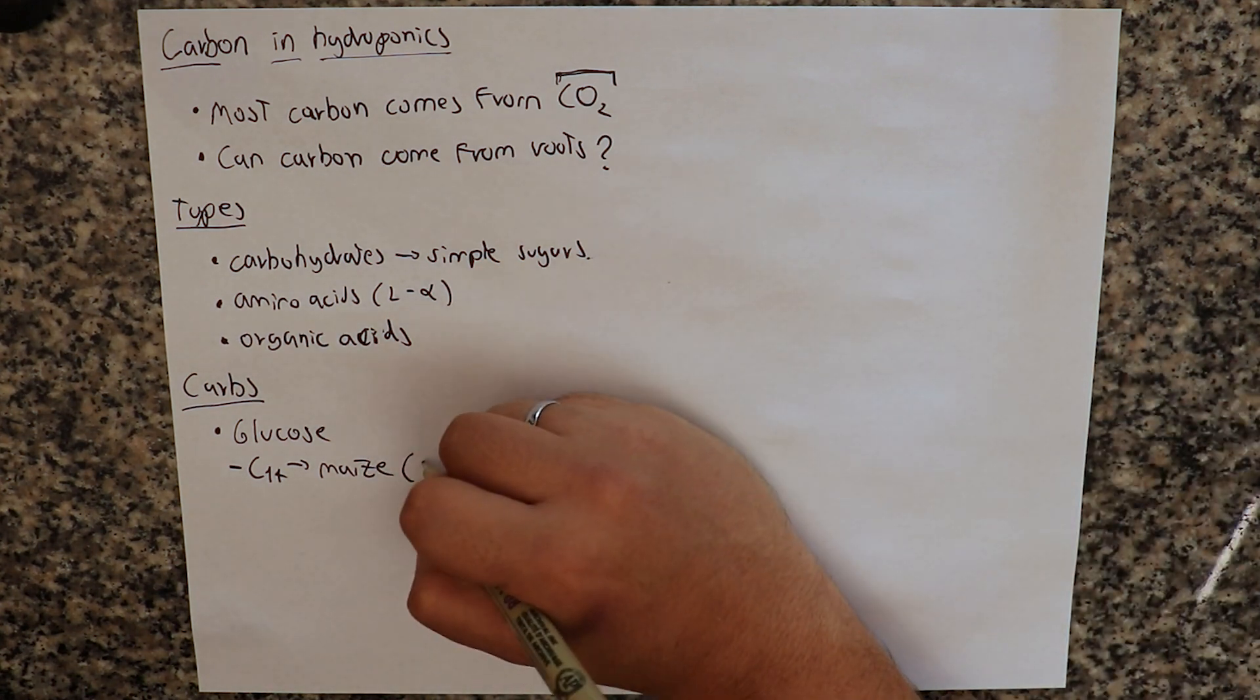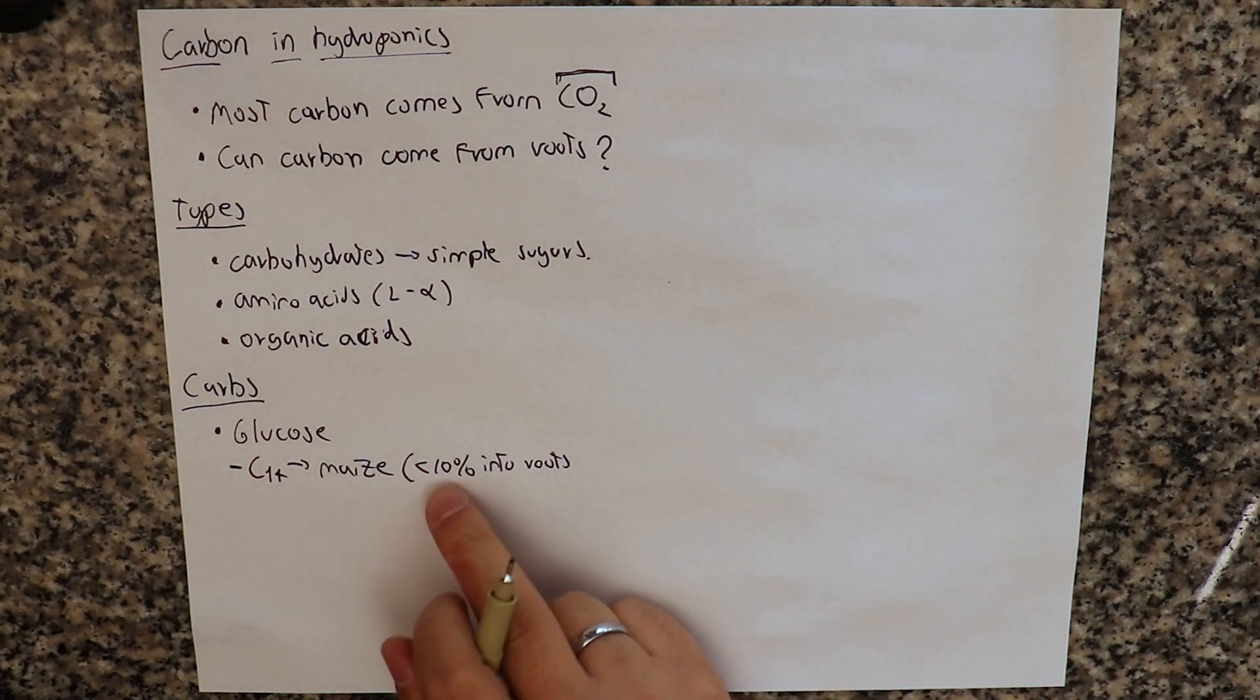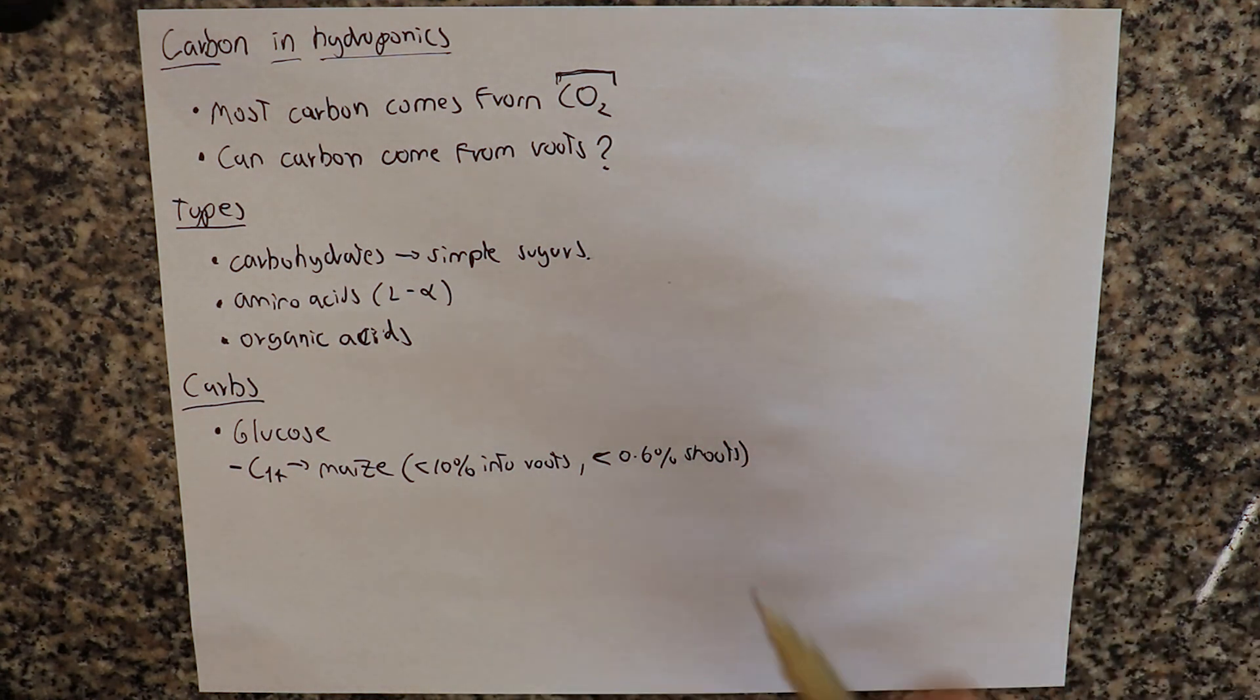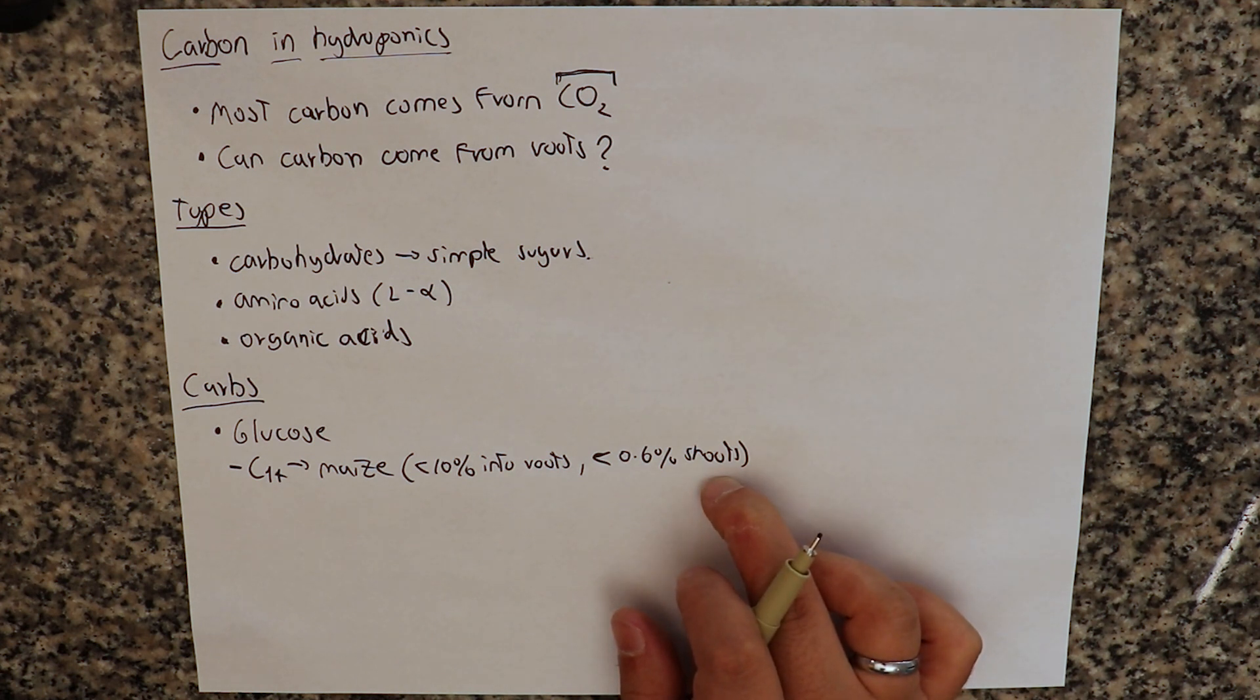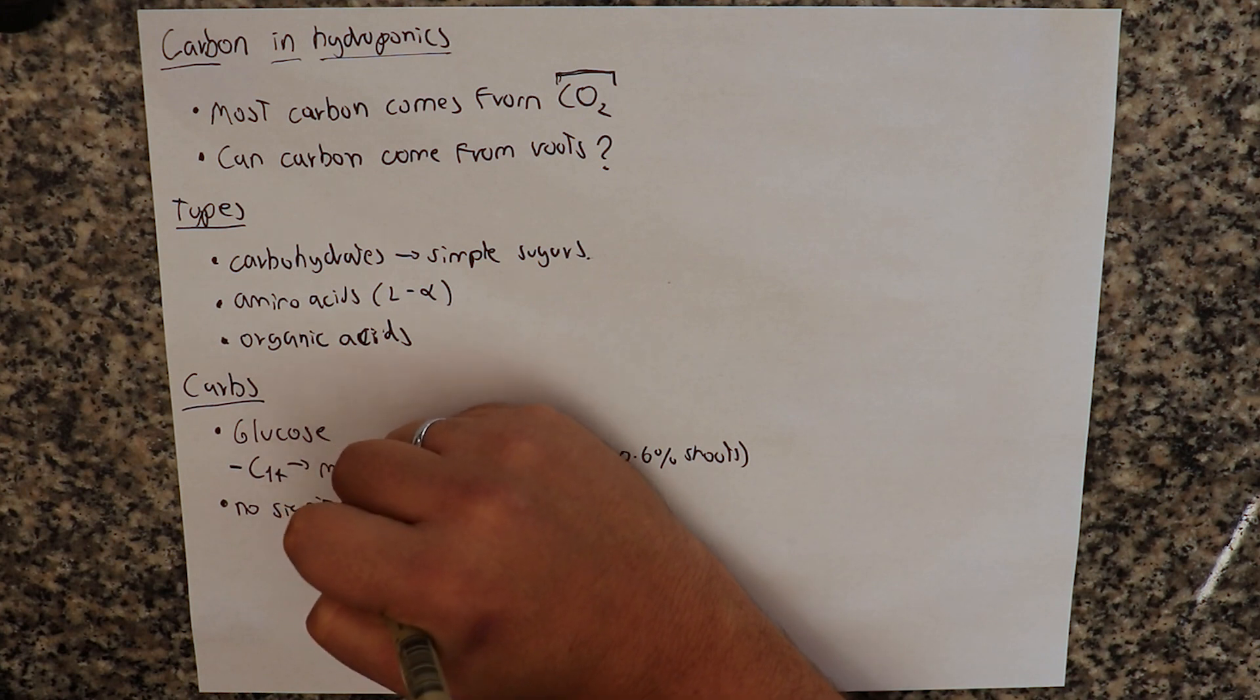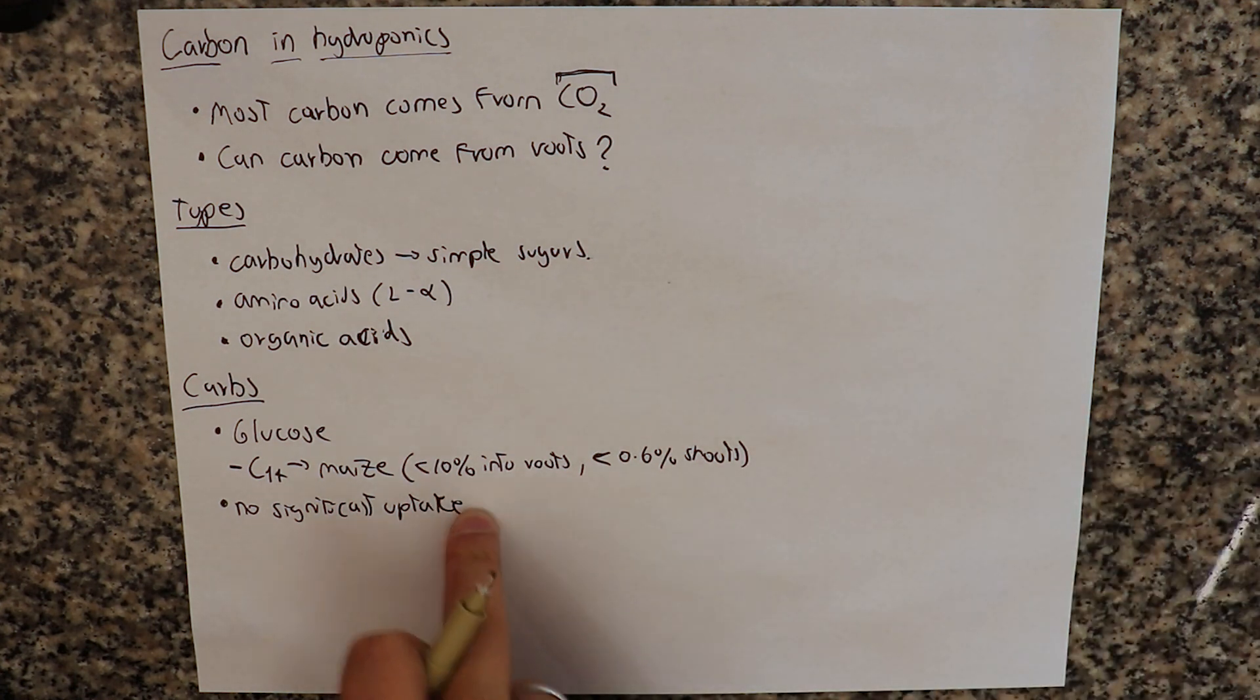What this study found is that less than 10% of the glucose provided went into roots and less than 0.6% went into shoots. Shoots are the upper part of the plant, the aerial part of the plant. So most of the carbohydrates never actually went into the plant and only a small amount went into the shoots. In this study, the media was kept pretty inert because this also generates problems, as I'm going to explain a little bit. So the conclusion of this study was no significant uptake.